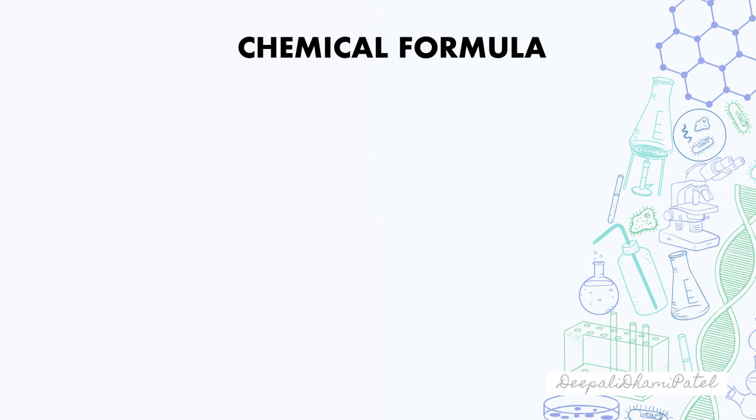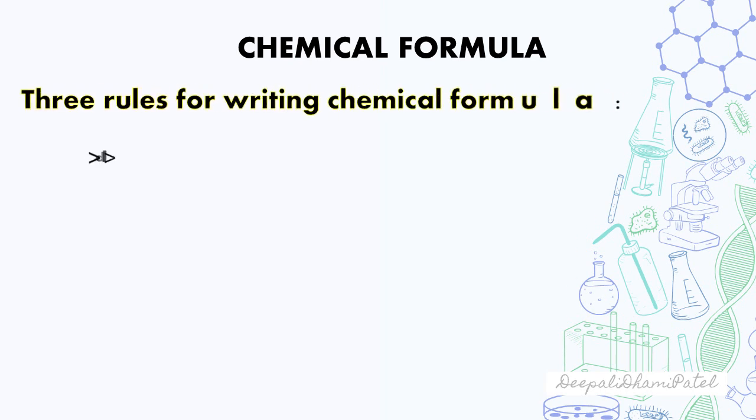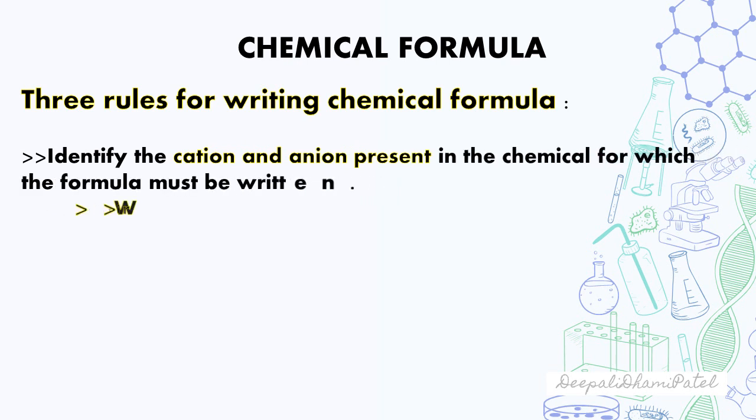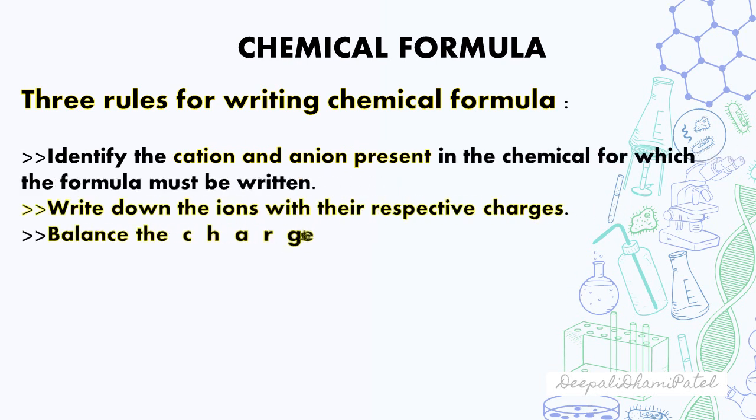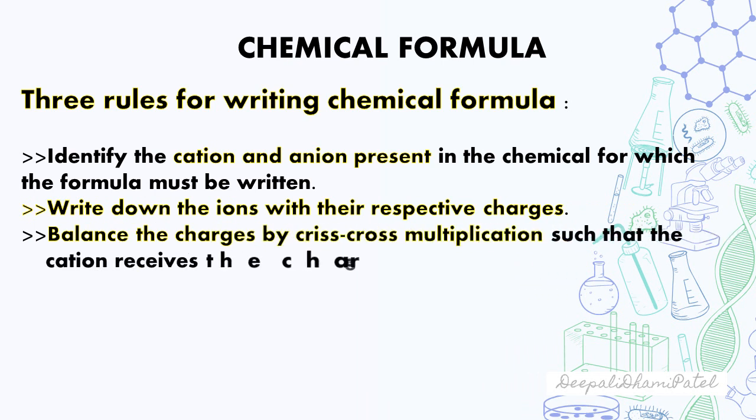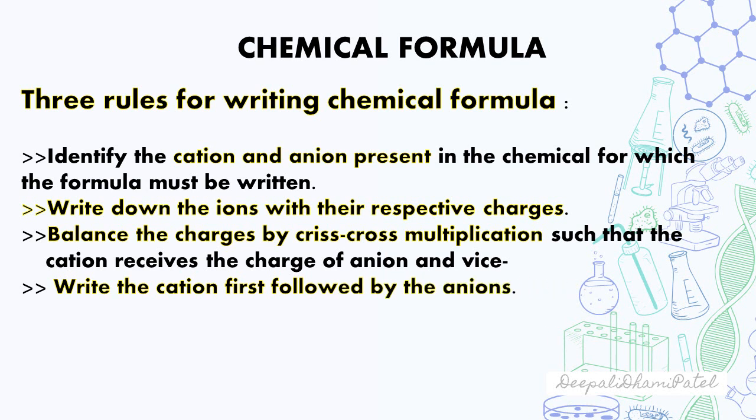Now let us see how, depending upon the valencies and the octet rule, chemical formulas of a substance can be formed. Three rules for writing chemical formulas. Identify the cation and anion present in the chemical for which the formula must be written. Write down the ions with their respective charges. Balance the charges by crisscross multiplication such that the cations receive the charge of ions and vice versa. Write the cation first followed by the anions. If these basic rules are memorized, then it is very easy to form any chemical formula.